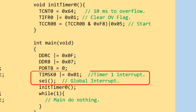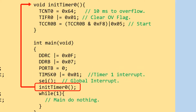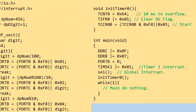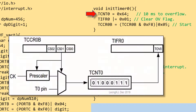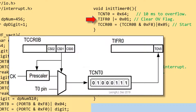Timer zero interrupt is set up. This function is called to initialize timer zero. The timer counter is loaded with a value which will determine when the timer will interrupt. Loading it with 0x64 hex will cause the timer to overflow or interrupt in 10 milliseconds. The timer overflow flag is cleared to zero, and this instruction starts the timer.